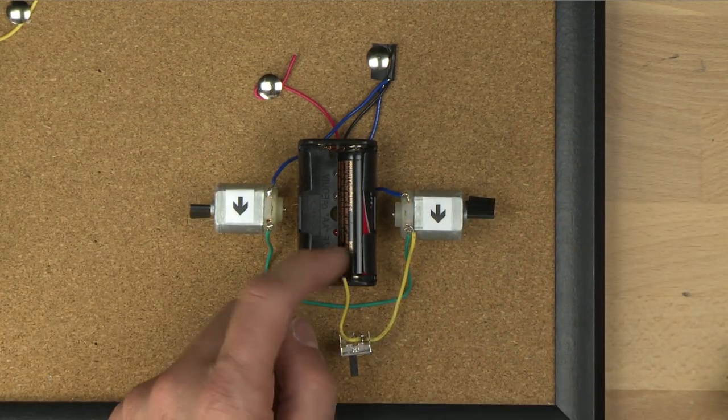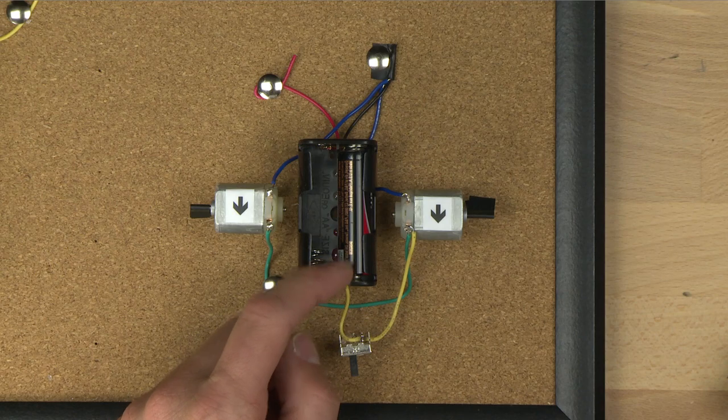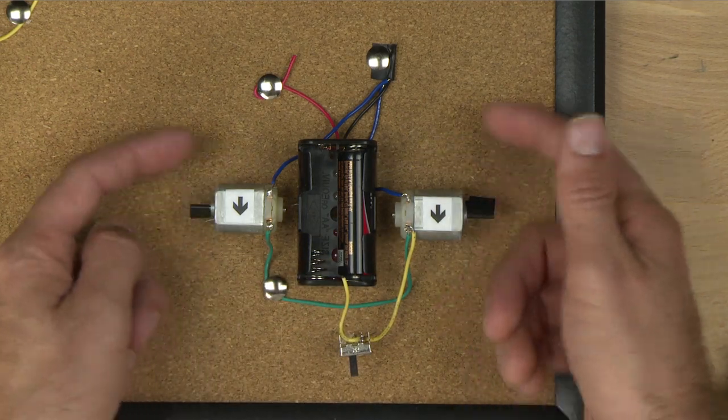They're pulling power from the battery, and it's flowing through the motors, causing it to spin this way.